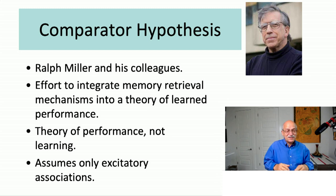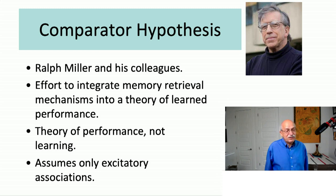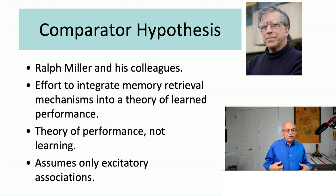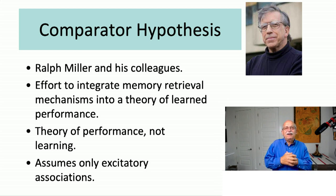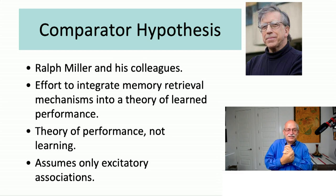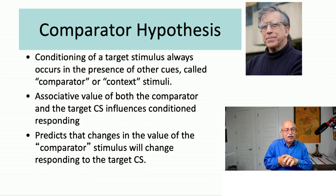Let's move on to the first slide, which shows some of the basic elements of the Comparator Hypothesis and a picture of Ralph Miller. This theory is an effort to integrate memory retrieval mechanisms into a theory of learned performance — it's concerned with what determines whether or not you perform a conditioned response. It's a theory of performance, not a theory of learning per se. It assumes that you only learn excitatory associations, which has been a bit controversial, raising the question of how you get conditioned inhibition.